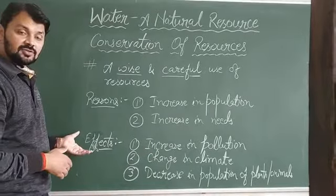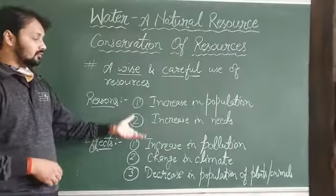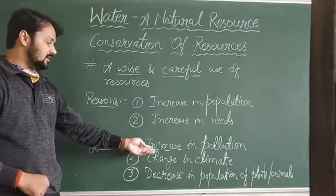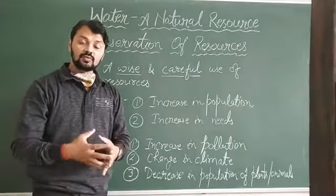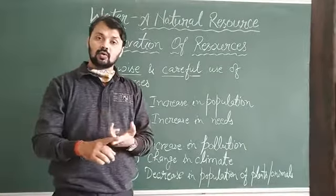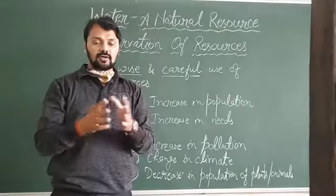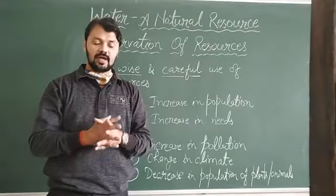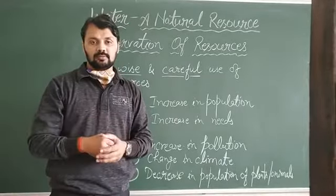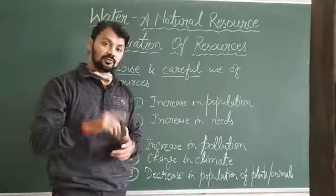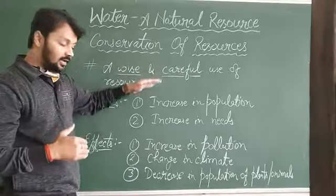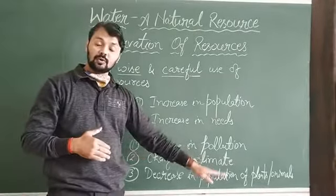What are the effects of resources being used at a faster rate? The first is increase in pollution. If we use fossil fuels like coal, diesel, petrol, and natural gases at a faster rate, all these fuels increase the level of carbon dioxide, because carbon dioxide is released when they are burned. So the rate of consumption should be lowered down so that pollution decreases.